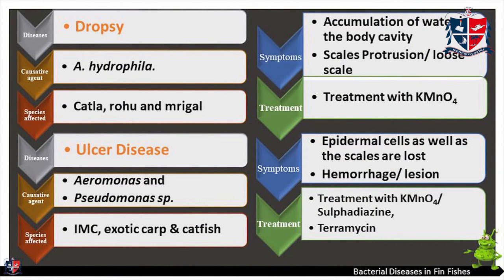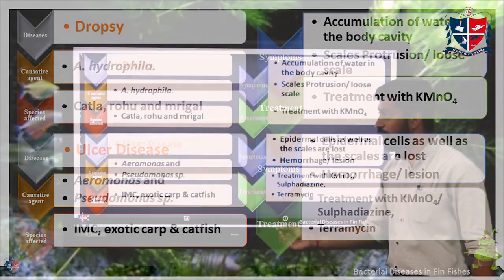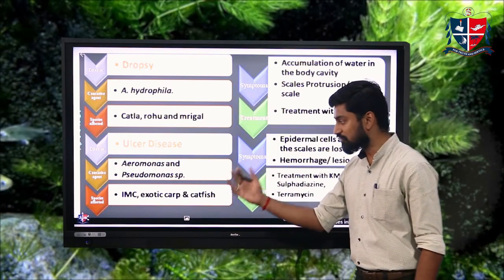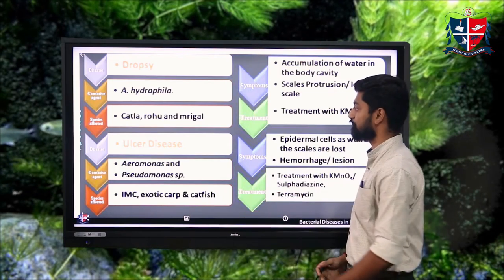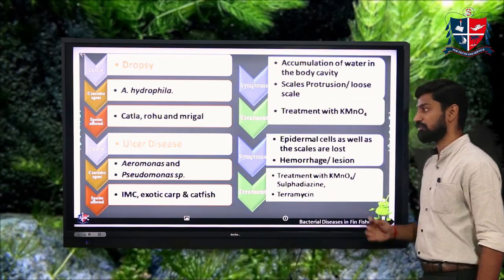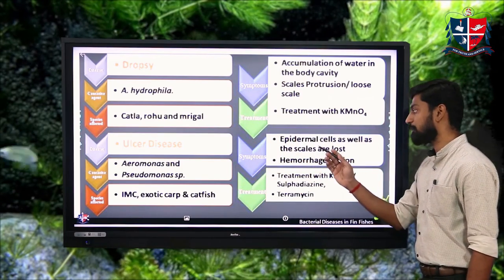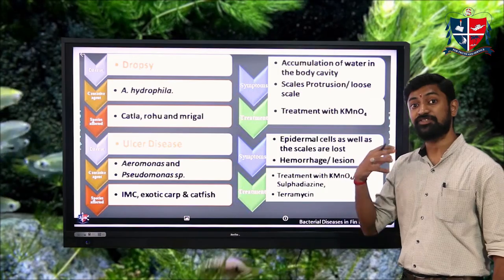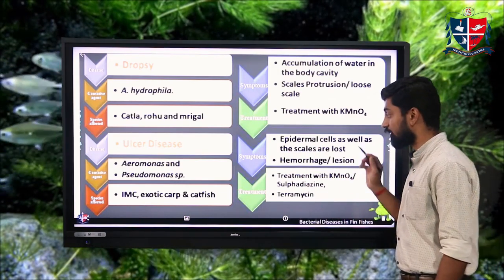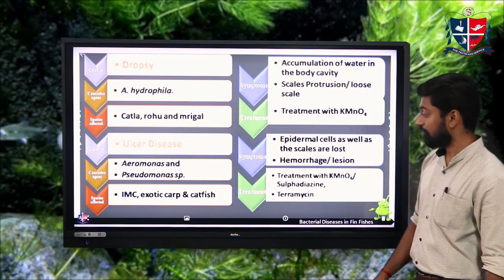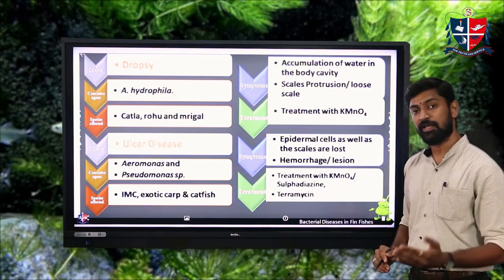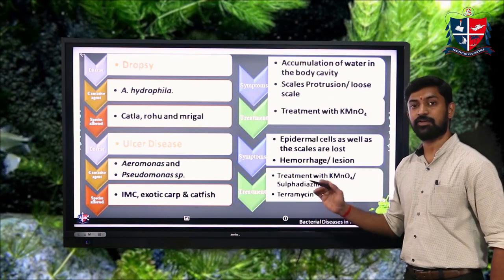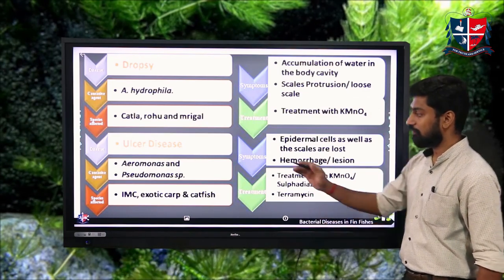Ulcer disease is caused by Aeromonas and Pseudomonas species, affecting major carps, exotic carps, and catfishes. Symptoms include loss of epidermal cells and scales, hemorrhage, ulceration, and lesions. Major treatment methods include potassium permanganate bath treatment, sulfa-dicide, and terramycin (oxytetracycline).